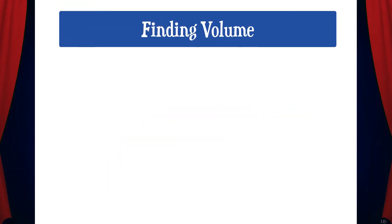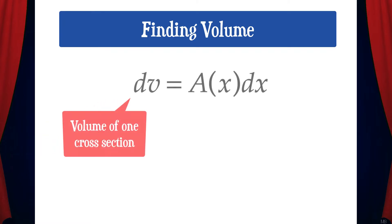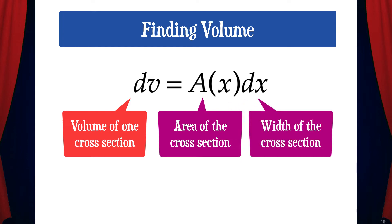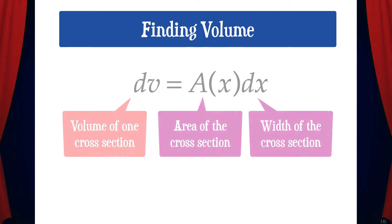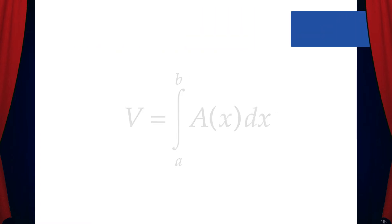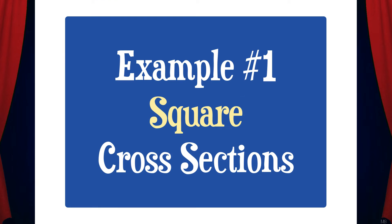Now let's talk about how to find the volume of one of these solids. Here's the main idea: the first thing we need to do is find the volume of a single cross-section. We'll call this dV, and that's equal to the area of the cross-section times the width dx. Then to find the volume of the entire solid, we take the integral from a to b of A(x) dx.